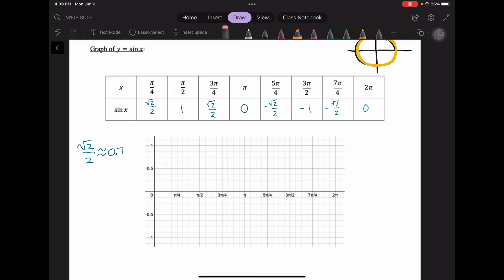At pi over 4, we're going to be at about 0.7. At pi over 2, we're at 1. At pi, we're at 0. At 5 pi over 4, we're at about negative 0.7. At 3 pi over 2, we're at negative 1. At 7 pi over 4, we're at negative 0.7. And at 2 pi, we're at 0.